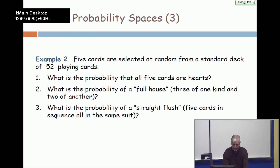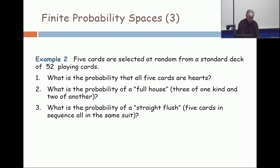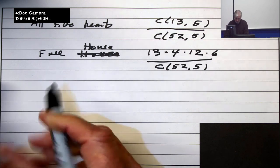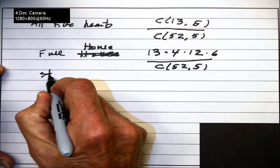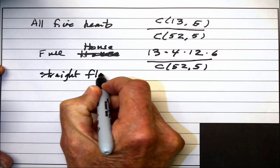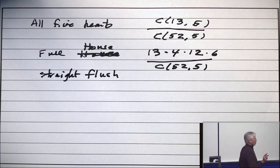Now, what's the probability of a straight flush? Five cards occurring sequentially and all in the same suit. Straight flush. Okay. Now remember that the ace can go both ways.